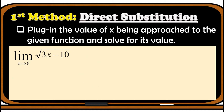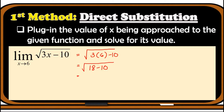Third example: evaluate the limit of the square root of 3x minus 10 as x approaches 6. Using direct substitution, x becomes 6: square root of 3 times 6 minus 10. Multiply 3 and 6 to get 18 minus 10, which is 8. To simplify square root of 8, we get factors 4 and 2, so square root of 4 times 2. Square root of 4 is 2, so the answer is 2 square root of 2.